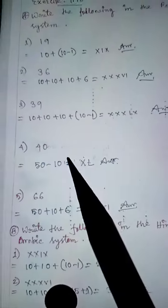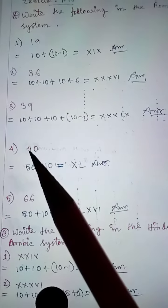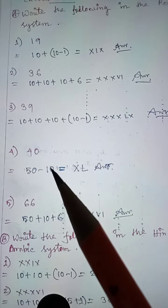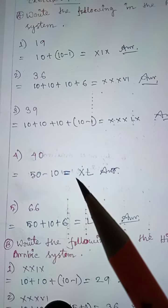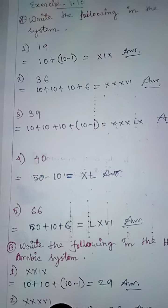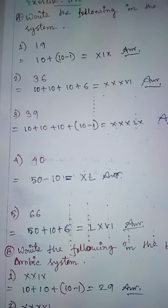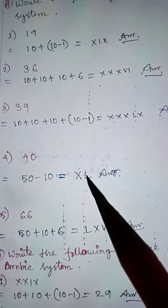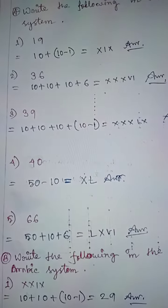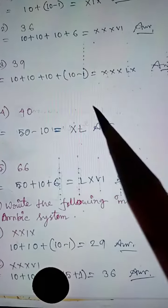Problem 4: 40. This is—sorry, 50 minus 10 equals 40. 50 is written as L, like this, so XL equals 40.